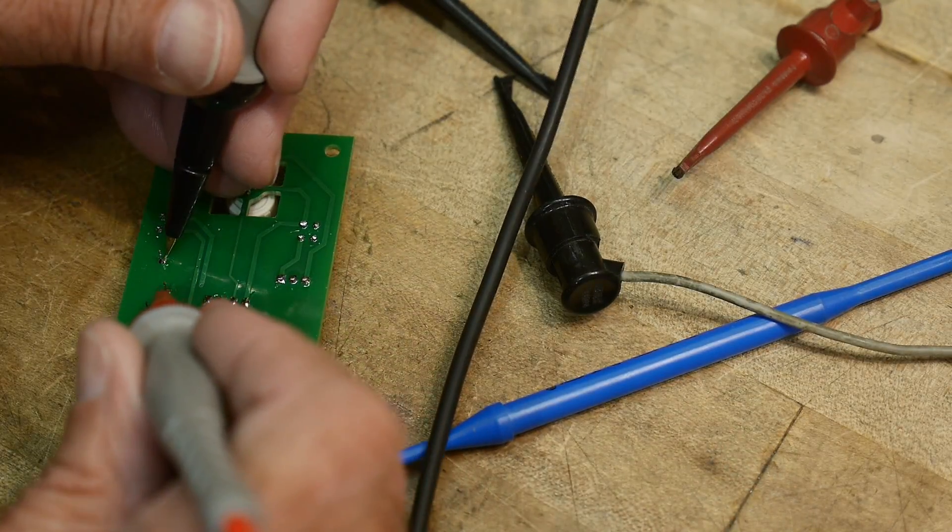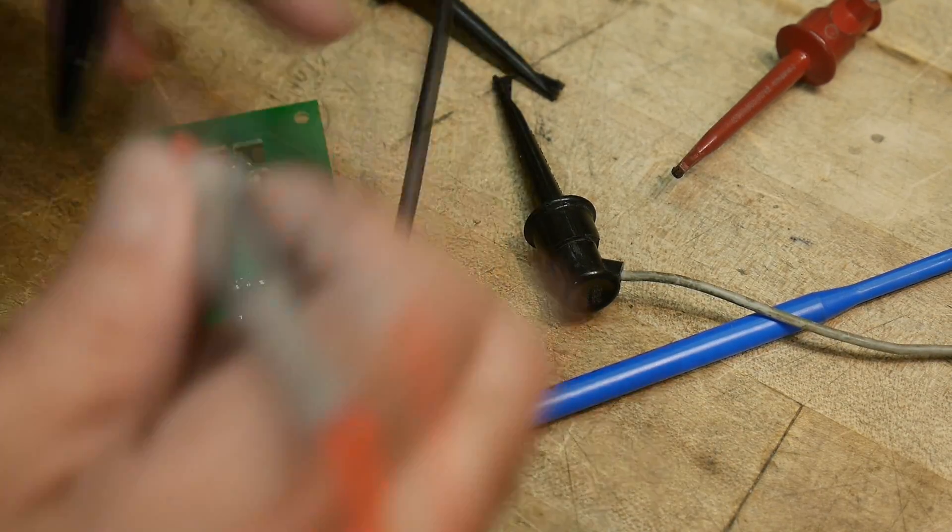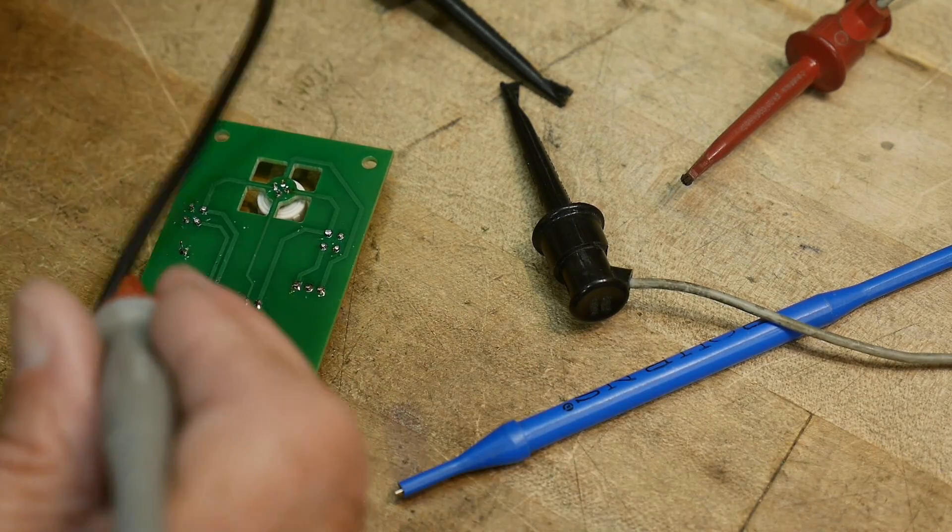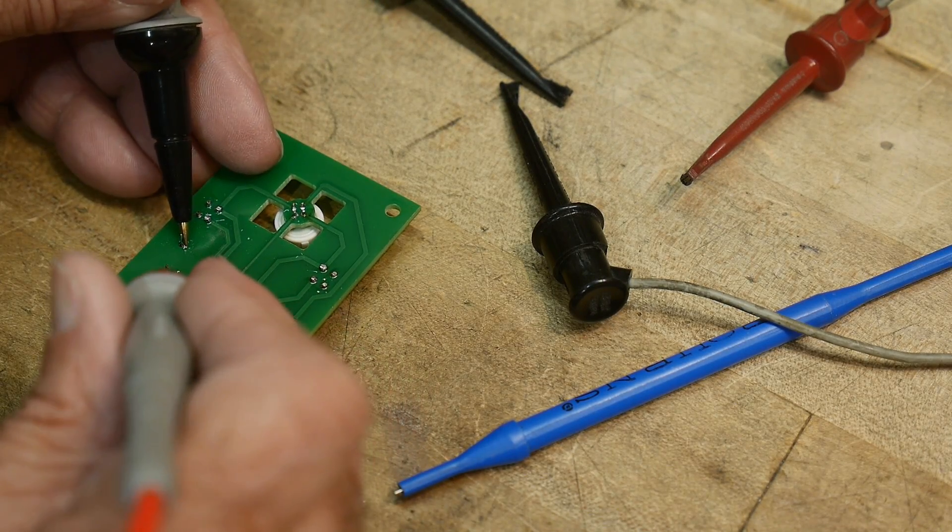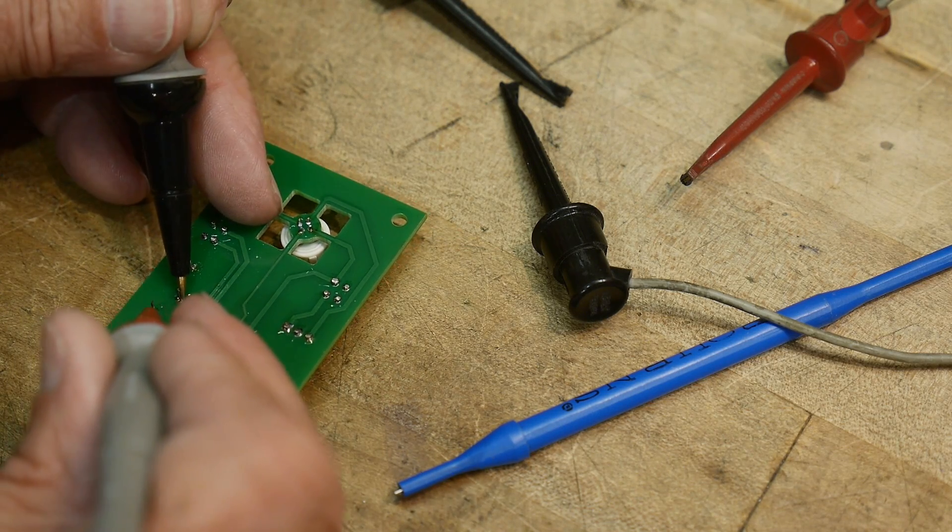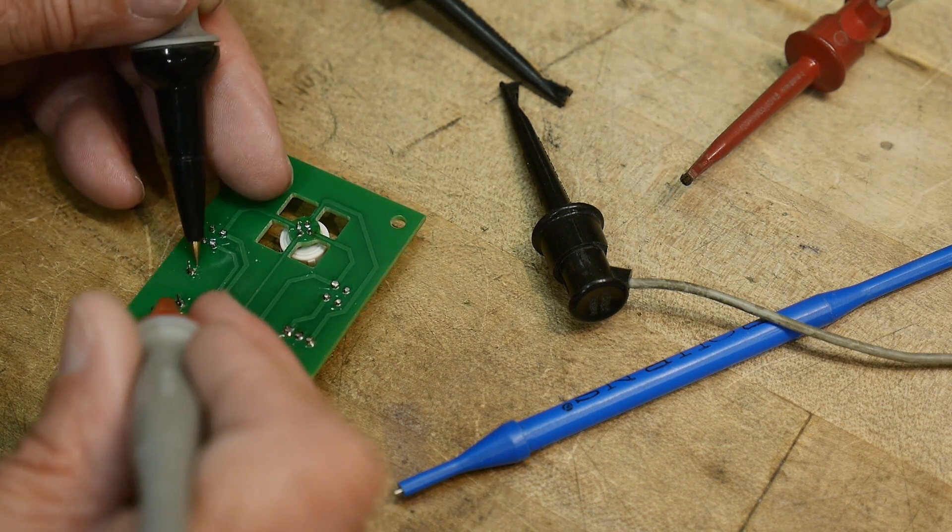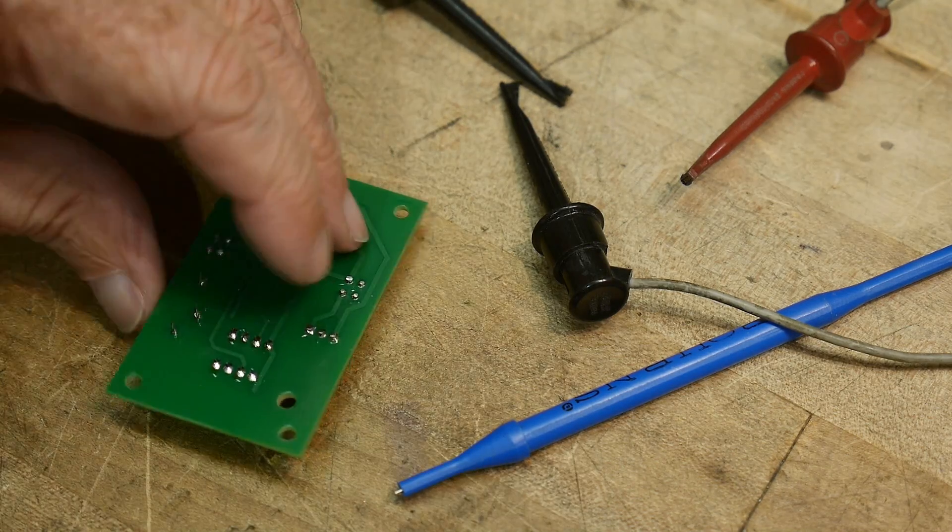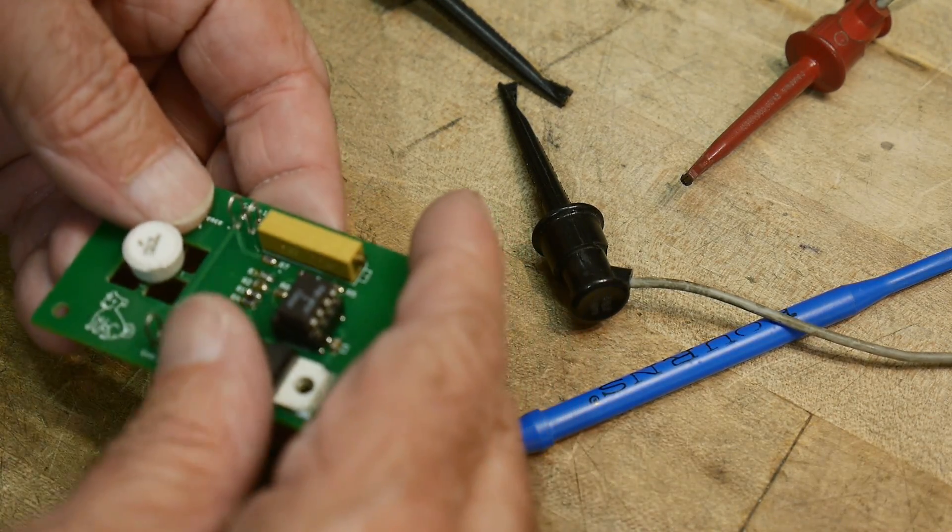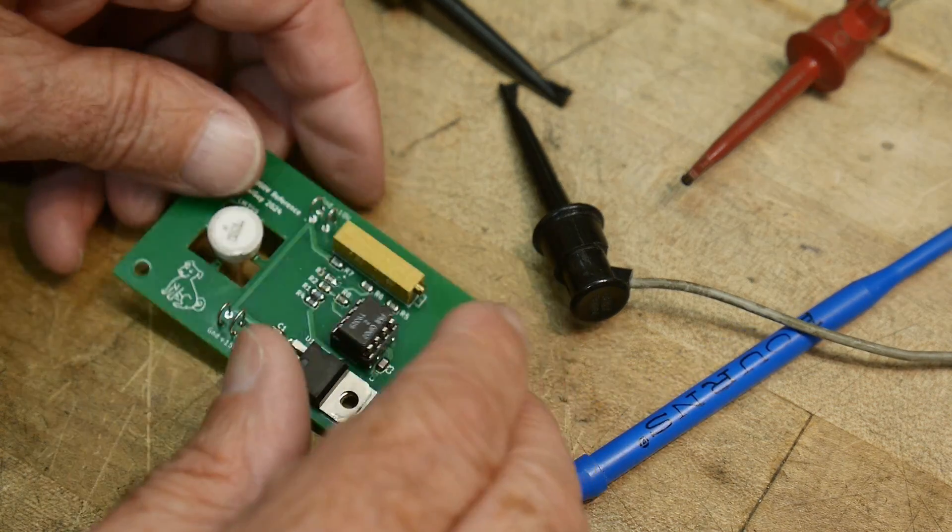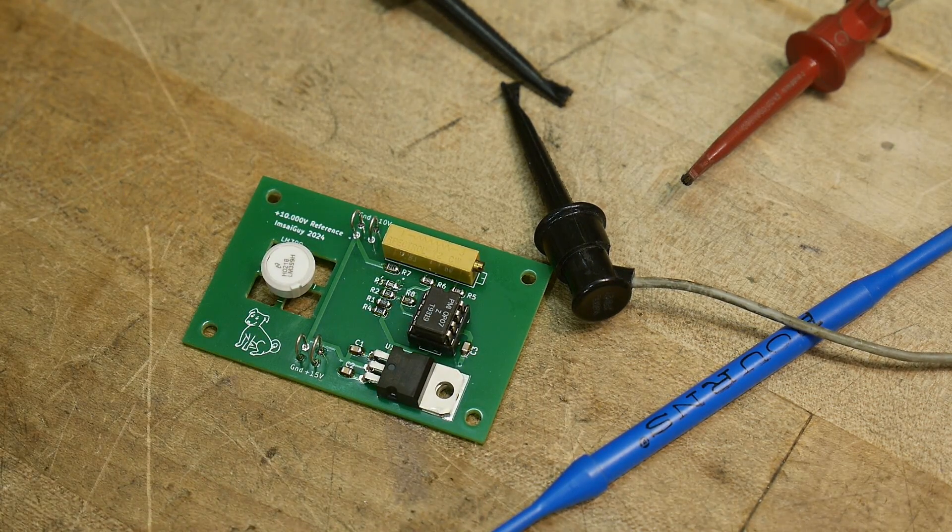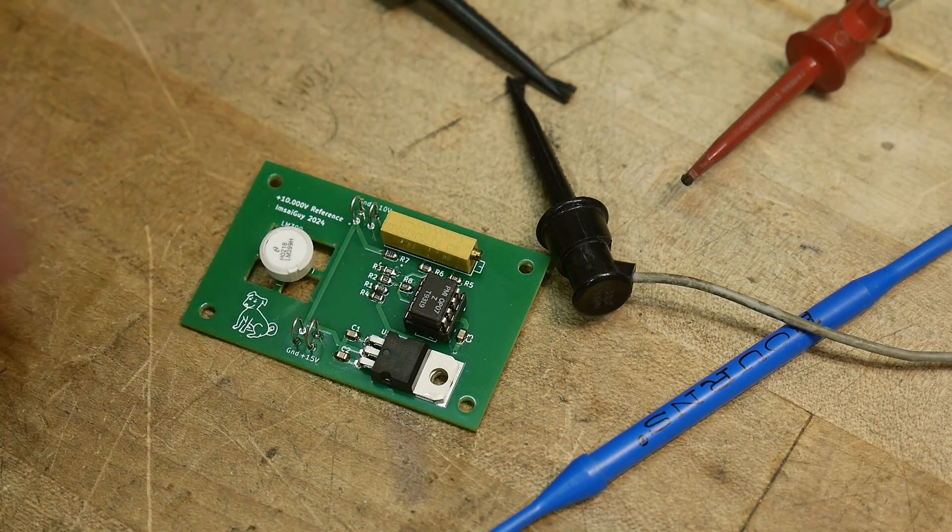Currently our potentiometer is measuring 1k on one side and 7k on the other, so it wants to go to this side. That's the R7 side, so R7 needs to... it's 10k right now, we'll need to lower it down to a smaller value. I'll put in a 4.7k, that should fix it up.